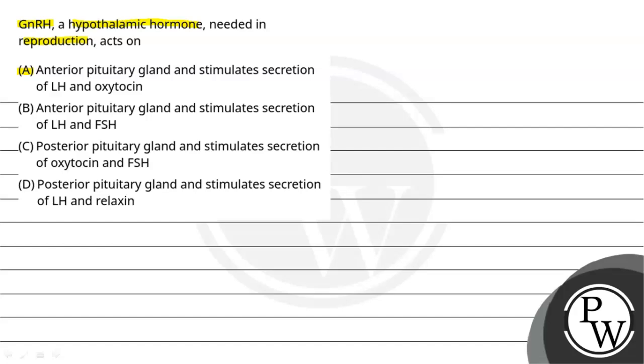Let's read the options. A: Anterior pituitary gland and stimulates secretion of LH and oxytocin. B: Anterior pituitary gland and stimulates secretion of LH and FSH. C: Posterior pituitary gland and stimulates secretion of oxytocin and FSH. D: Posterior pituitary gland and stimulates secretion of LH and relaxin.